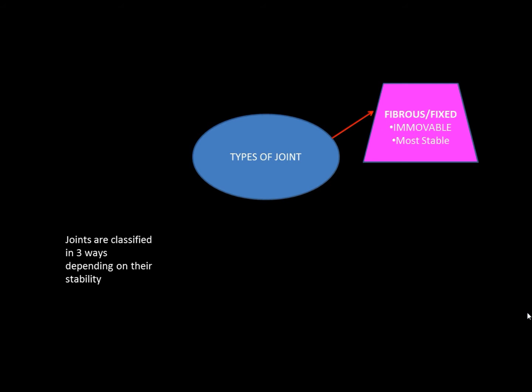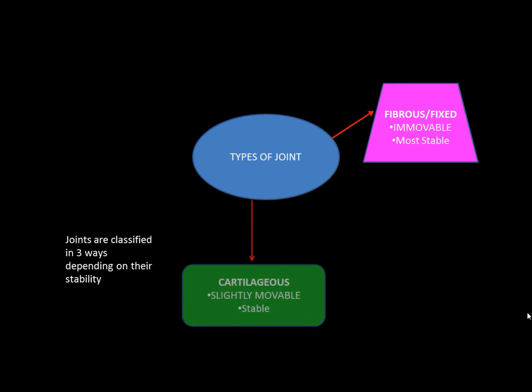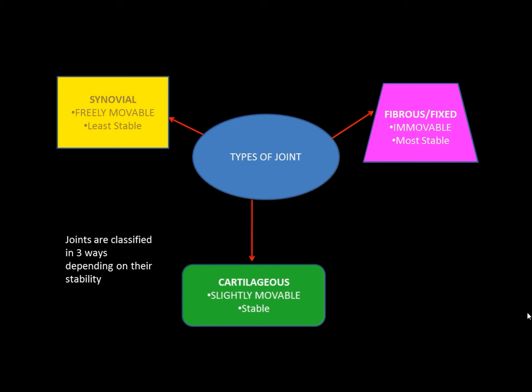The most stable type of joint is a fibrous or fixed joint. We then have cartilaginous joints, which are slightly movable, and so they have a reasonable stability. And then we have the most common type of joint, which is a synovial joint, and this is the least stable of the three. So let's look at these three different types of joint in a little bit more detail.